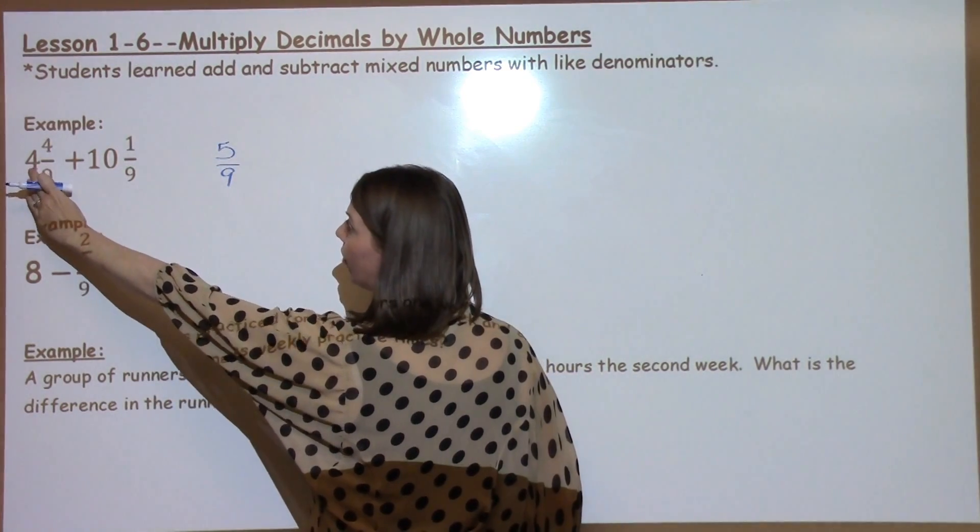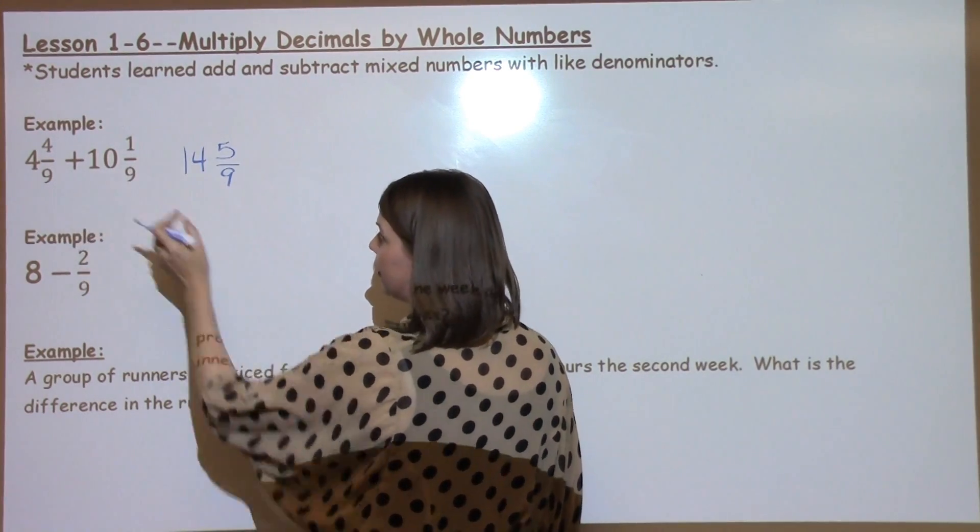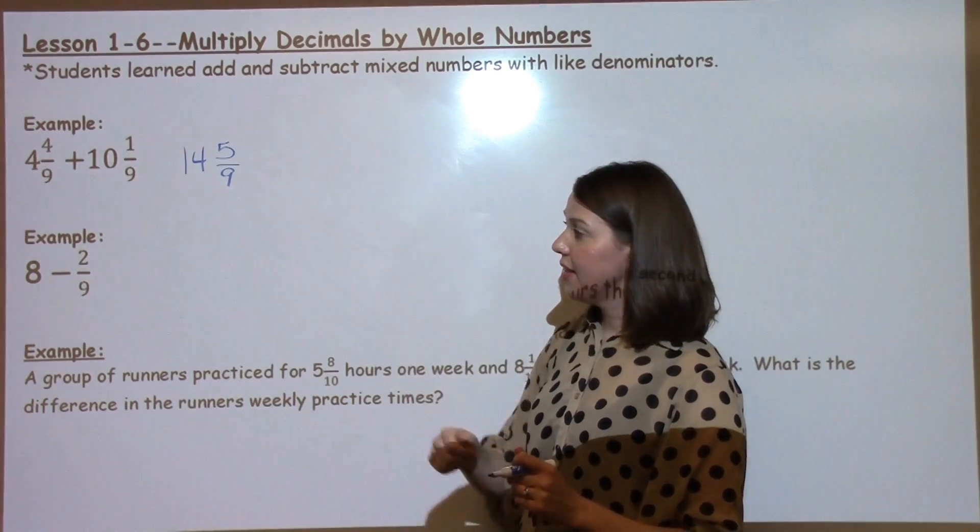Going to our whole numbers, we have 4 plus 10 is 14. When I want to add those two together, I get a mixed number of 14 and 5 ninths.